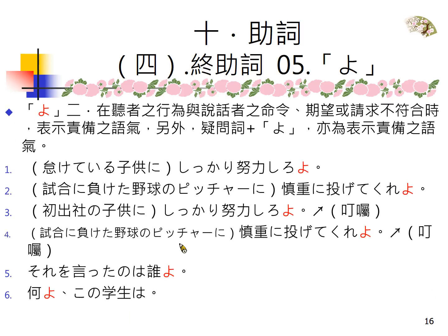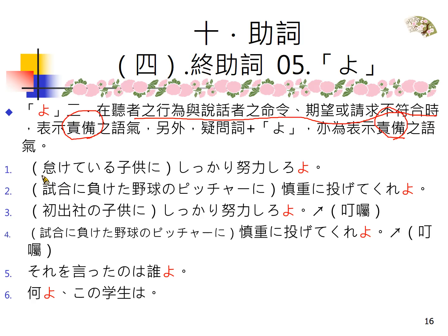好，我们看第二个用法：在听者的行为跟说话者的命令、期望或请求不符合的时候，也就是说真的发生了那样的事实，但是跟我们的期望命令或请求不符合的时候，我们就责备他一下——加了よ，有这种语气。另外疑问词加よ也是表示责备的语气。比如说我们希望小孩子能够努力一点，认真念书，不要那么懒惰。